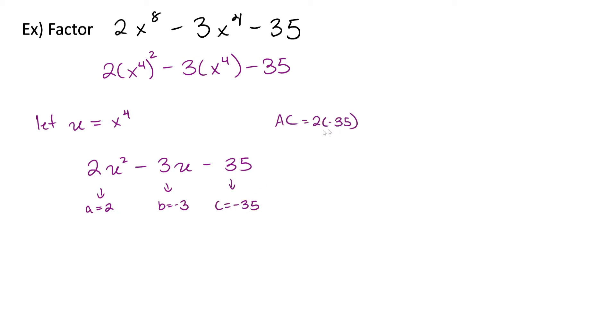Our AC here is 2 times negative 35 gives us negative 70. The factors of negative 70 that add to negative 3 are positive 10 and negative 7. So we can rewrite this polynomial as 2u squared minus 10u plus 7u minus 35. Now we can factor by grouping.